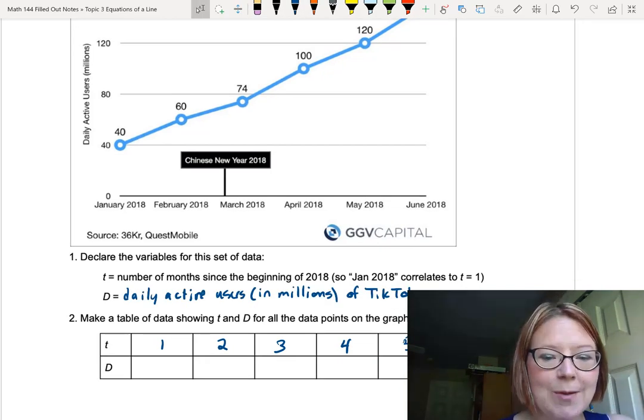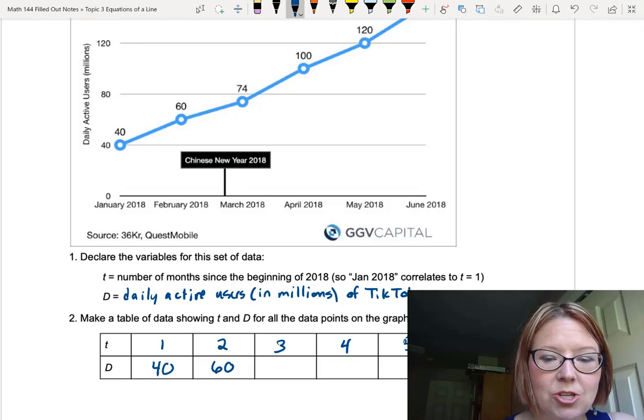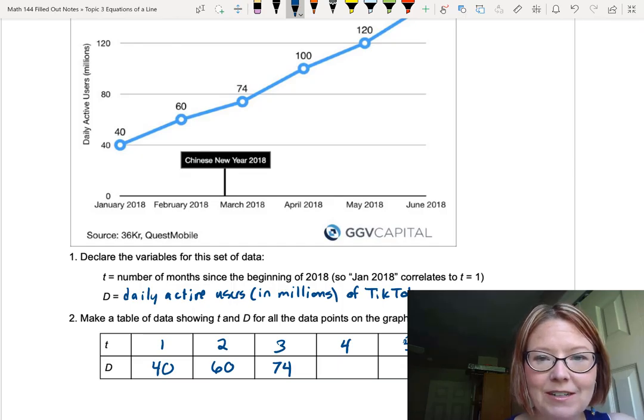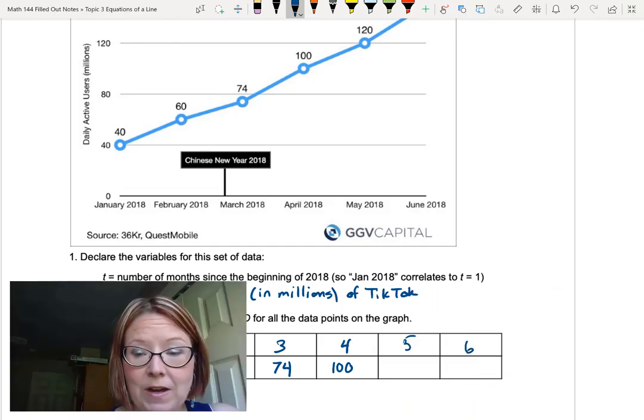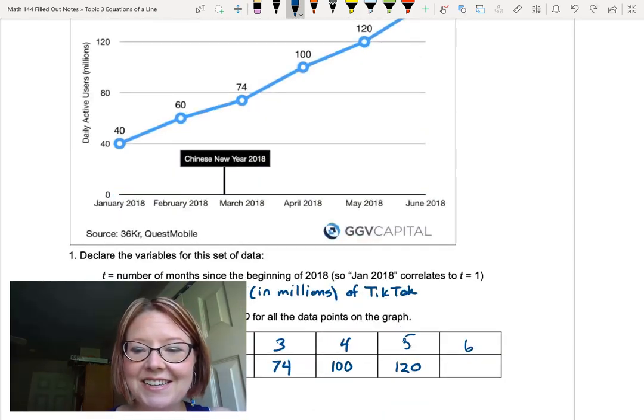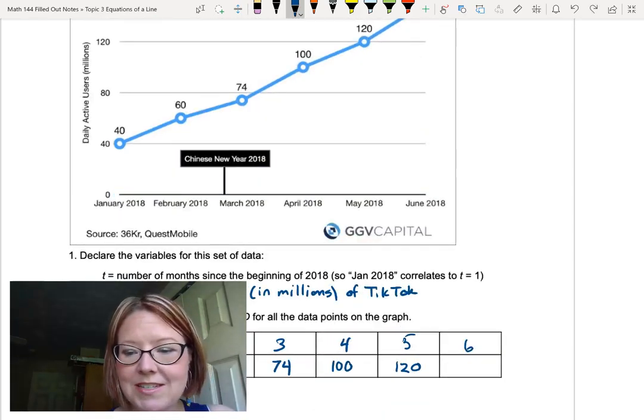And I'll go ahead and complete this table by putting in our y values. So t equals one corresponds to d equals 40. t equals two corresponds to d equals 60. t equals three corresponds to d equals 74. t equals four corresponds to d equals 100. t equals five corresponds to d equals 120. And finally, t equals six corresponds to d equals 150.